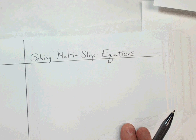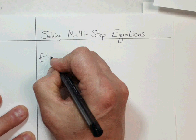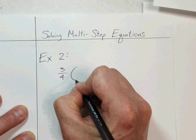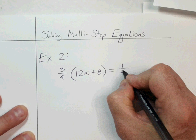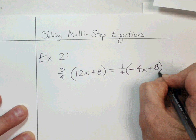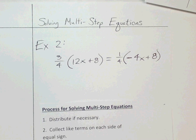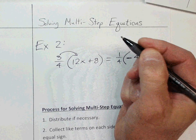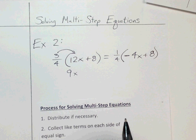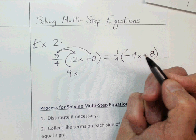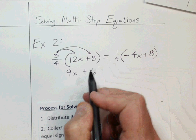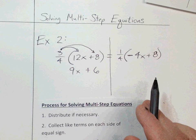Let's do Example 2 — this one involves fractions, but your calculator can handle fractions if needed. Do we have parentheses? Yes, so we need to distribute. Three-fourths times twelve is nine, so we get 9x in front. Then three-fourths times eight — three-fourths of eight is six — so we have 9x minus 6 on the left side after distributing. These are not like terms, so we stop at step one.